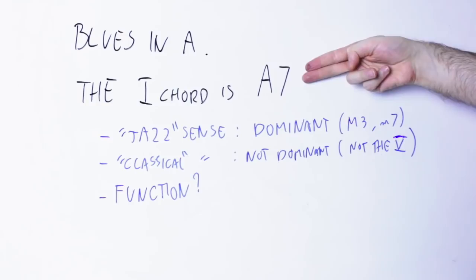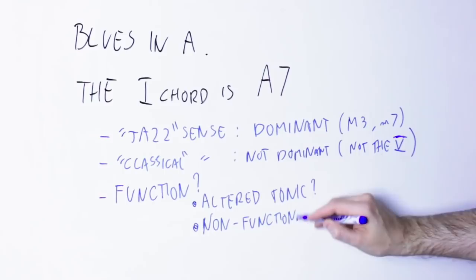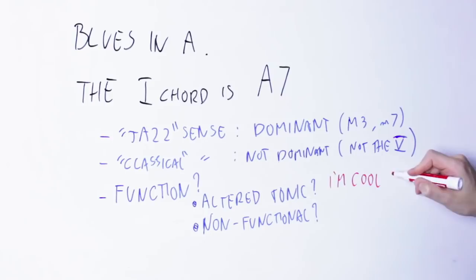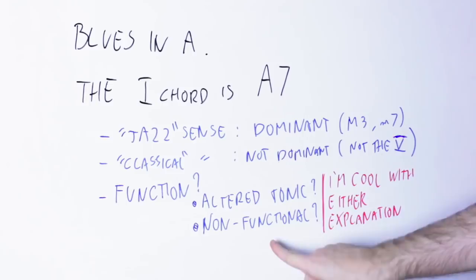Some people say that this chord here is a tonic chord, even if it's altered with this seventh. Some other people will say that this is a non-functional dominant chord, meaning that it doesn't have any of the three classical functions of the chord: tonic, subdominant, or dominant. Either way, this chord does not have dominant function.